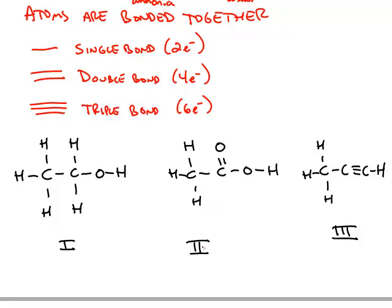You can see, for example, in structure number two, this carbon in the middle has a single bond to a carbon on the left and a single bond to an oxygen on the right, but it has a double bond to the oxygen at the top.